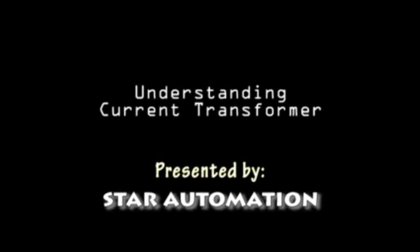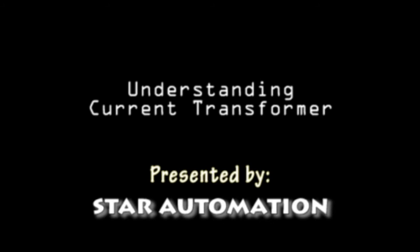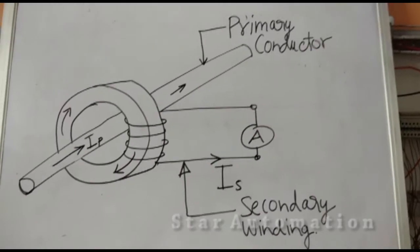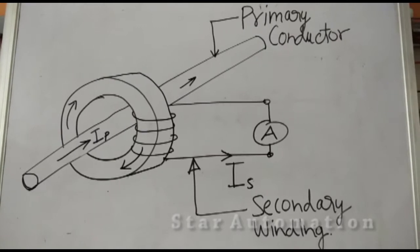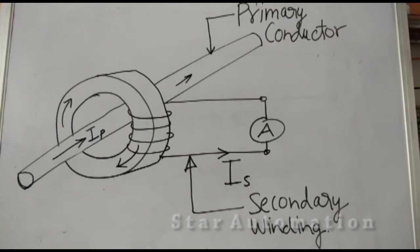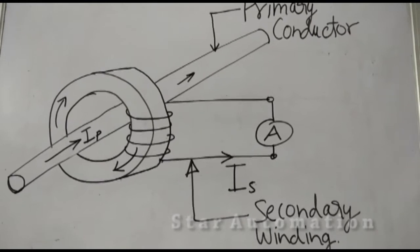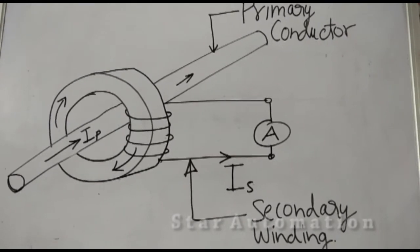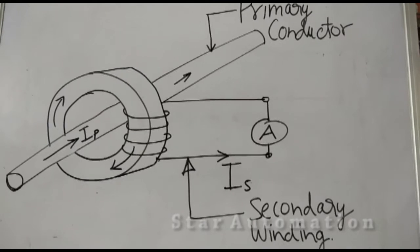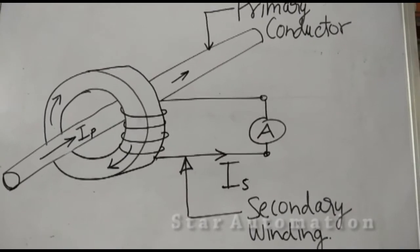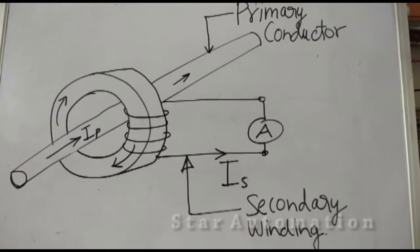Understanding Current Transformer. A current transformer is a type of transformer that is used to measure alternating current. Here we have a primary coil and a secondary coil. Current flows through a primary conductor and a secondary current is produced.